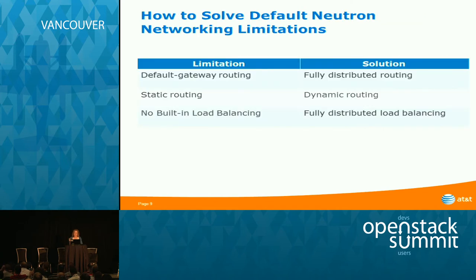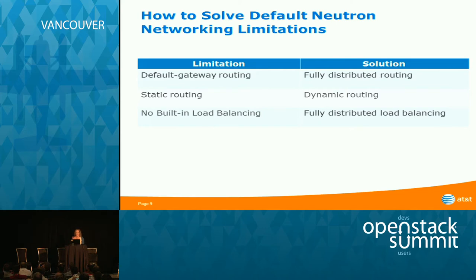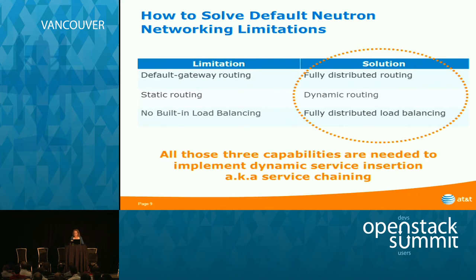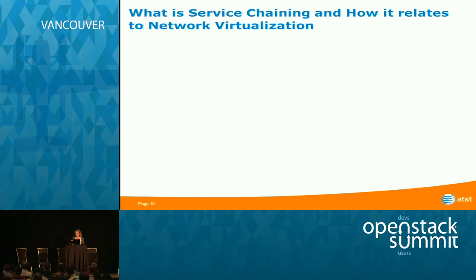These limitations and solutions are fairly obvious. If you have only default gateway routing it's not sufficient — you need fully distributed routing, as today there is fully distributed switching. Static routing needs to become dynamic routing. There is no built-in load balancing, so you need fully distributed load balancing. If you implement fully distributed routing correctly, load balancing comes for free. All three aspects are important capabilities needed to implement dynamic service insertion, also known as service chaining.